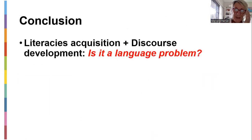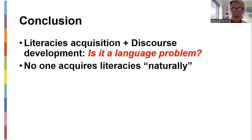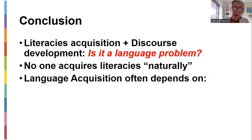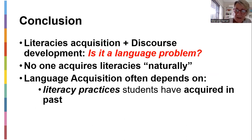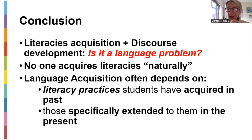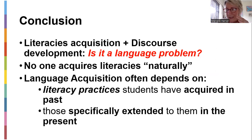So in conclusion: literacies acquisition and discourse development — is it a language problem? Research shows that no one actually acquires literacies naturally. You're going to have to do something with your teaching and learning practices. Learning acquisition depends on what students acquired in their past literacy practices, but it also depends on what you specifically extend to them now in the present. What are you doing in your class now to assist? You're not just whining about primary school — you're doing what you can to help them gain literacy proficiency by practicing, modeling, giving examples, scaffolding — not once, but continuously.